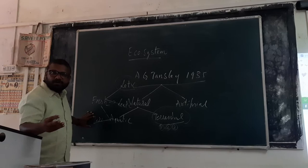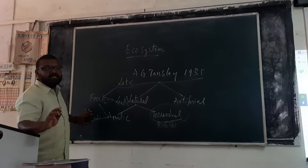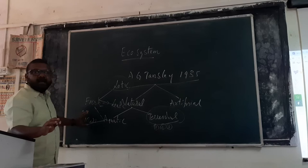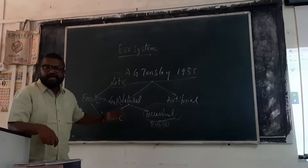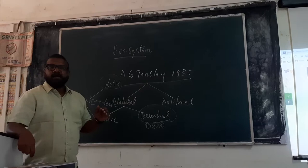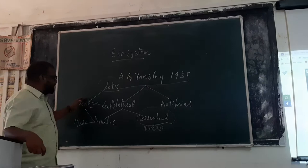Coming towards the marine water ecosystem, we can give the example like seas, oceans, etc. This means an increase in the salt content — that is 3% or above in the water resources — are called as marine water resources. We say sea, ocean, estuaries. The word estuaries means the adjoining of fresh water into a marine water is called as estuary ecosystem.